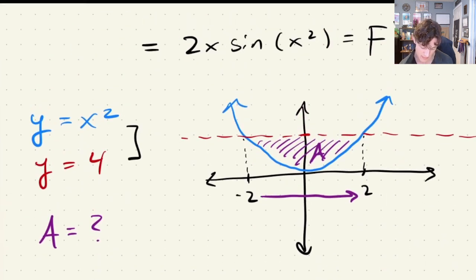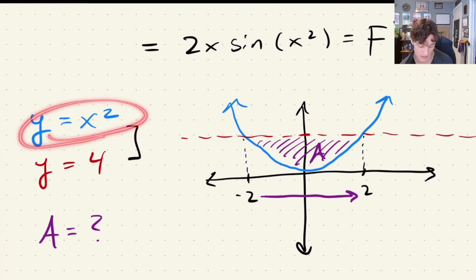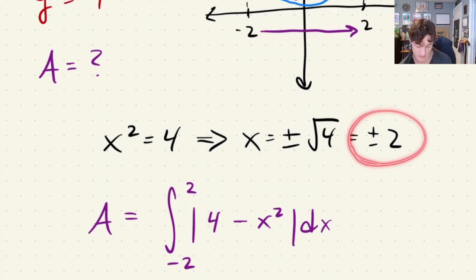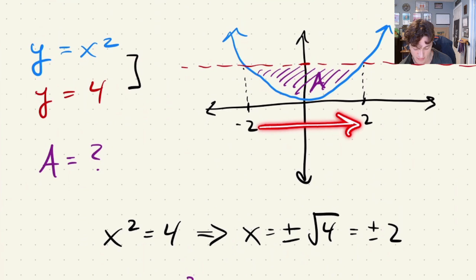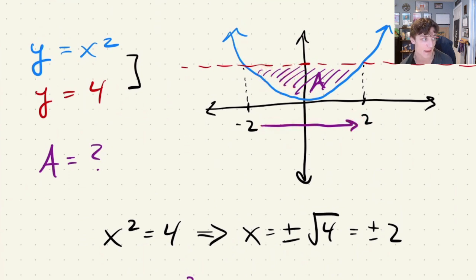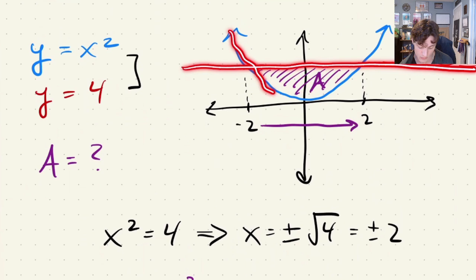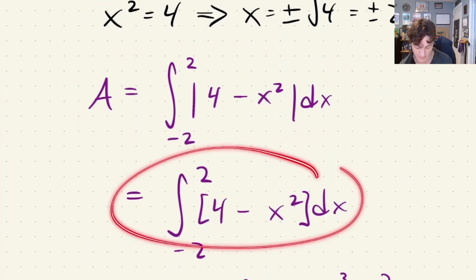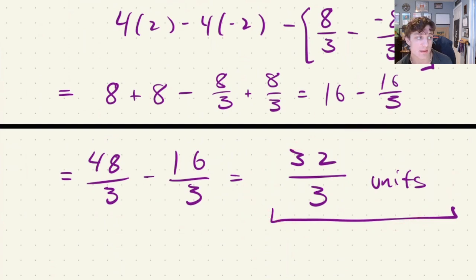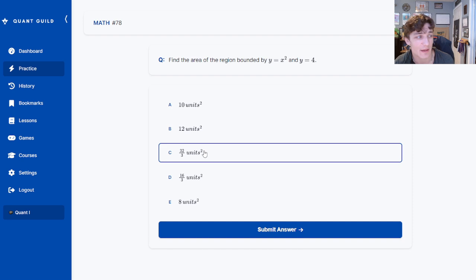To sum up the steps: we identified the functions creating the shaded region, found the points of intersection, then set up the integral. The bounds of integration are fixed at −2 to 2, encapsulating the entire shaded region on the x dimension. The y dimension is variable because the gap changes as we move across x; to account for that we take the difference between y equals 4 and y equals x squared. That accumulation of area across the space is why we drop the absolute value, giving us 32/3 units squared.